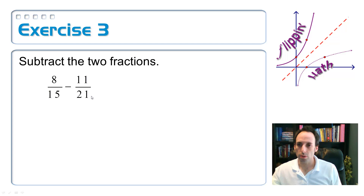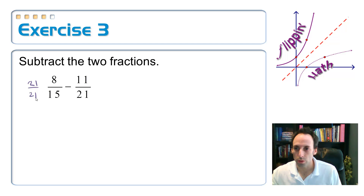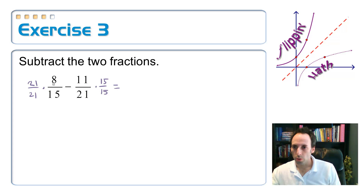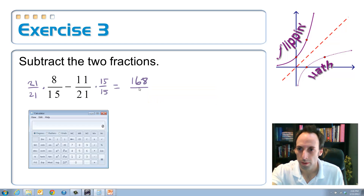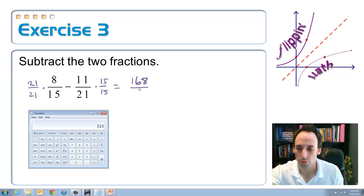So let's go ahead and multiply these two together to get our common denominator. On the left-hand fraction I would multiply by 21 on the top and the bottom, and on the right-hand fraction let's multiply by 15 over 15. So this will simplify into 21 times 8, which is 168, over — let me use the calculator — 21 times 15 is 315.